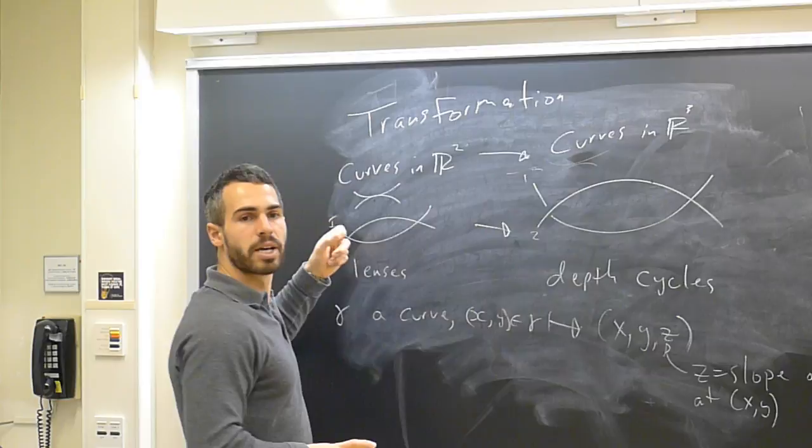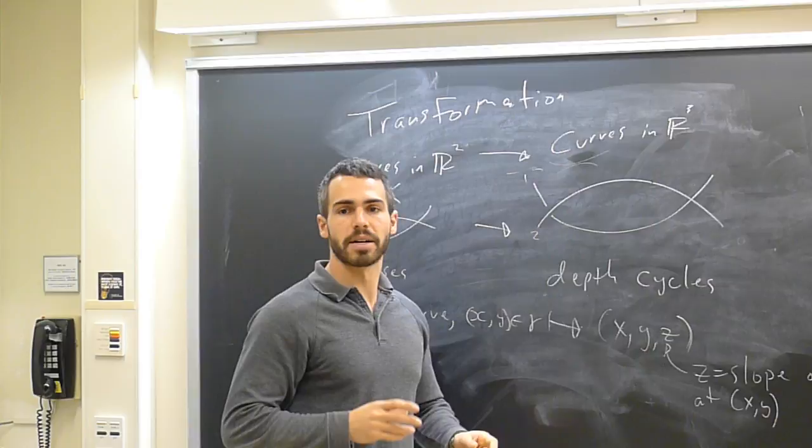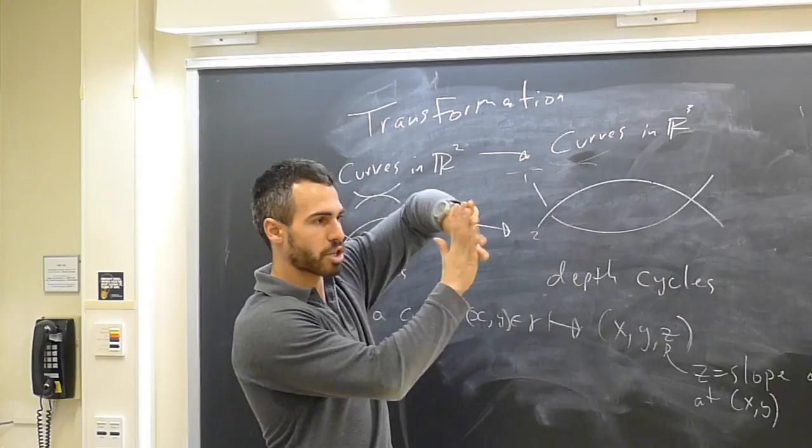And so then we're trying to show there aren't too many tangencies in this previous paper. So we say, well, suppose there's lots of tangencies. Map it over here. We have this collection of space curves. And there's lots of points where they intersect. And at that point of intersection, the tangent planes contain the z direction.